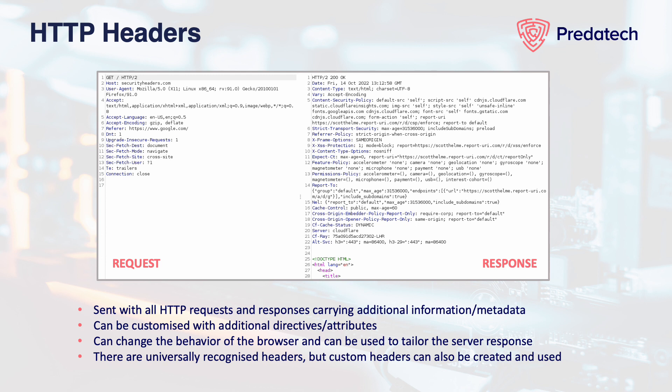For example, one of the request headers is the cookie header, which tells the server whose session the request belongs to. The server may also send a content-type header in the response, which tells the browser what sort of MIME type or file type is in the body and how it should be treated.